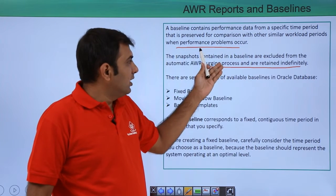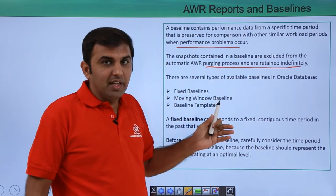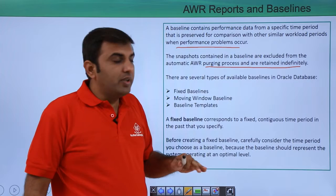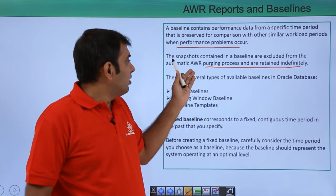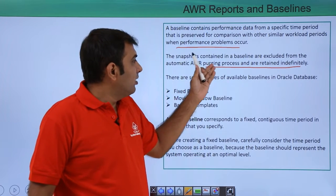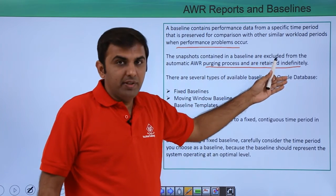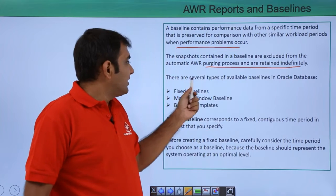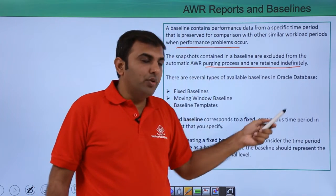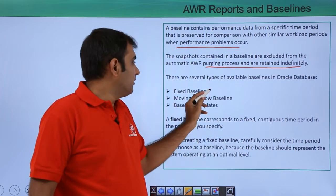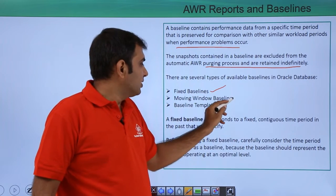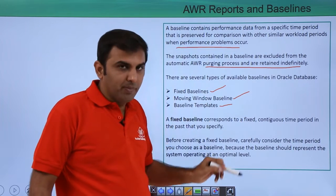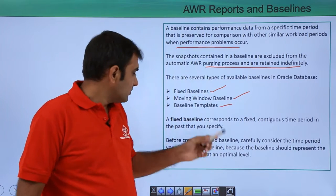Whatever snapshots are contained in the baseline are excluded from the automatic AWR purging process and retained indefinitely. There are several types of available baselines in Oracle Database: the fixed baseline, moving window baseline, and baseline templates.